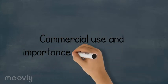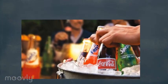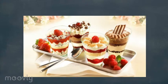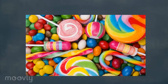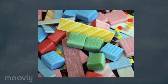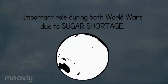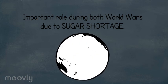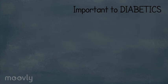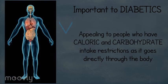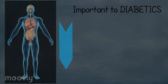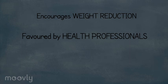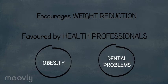Commercial use and importance of saccharin: Saccharin has been used to sweeten foods and beverages such as soft drinks, cakes, desserts, jams, canned fruit, candy, and chewing gum for centuries. It played an important role during both world wars as a result of a sugar shortage. Saccharin has become important to diabetics with caloric and carbohydrate intake restrictions, as it passes directly through the human digestive system without being digested. It also proved to encourage weight reduction and is favoured by health professionals for people with obesity and dental problems.